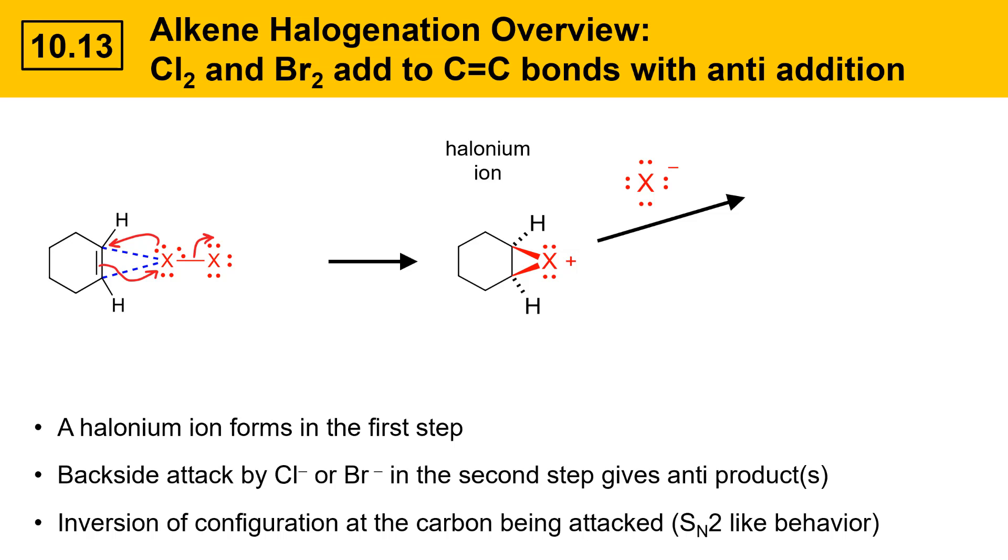So, if the nucleophile, X-, were to attack the upper carbon of this halonium ion, it would come in with a dash-bond orientation opposite of where the leaving group is leaving from. Here, the leaving group is pointing up, so the nucleophile would have to come in with a dash-bond orientation. The result is the following anti-product, where this halogen is the one that acts as the nucleophile, and this is the one that was part of the original halonium ion. Notice the anti-configuration. The two X's are trans to one another.